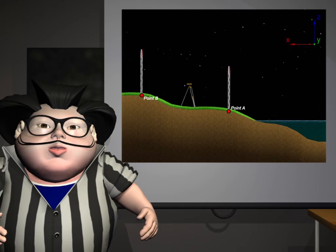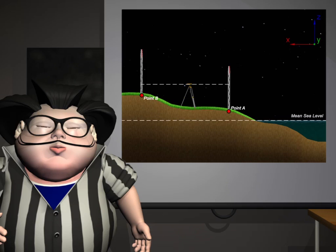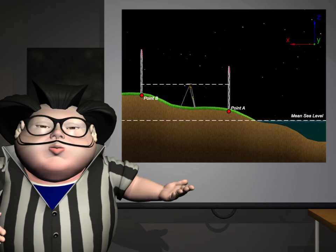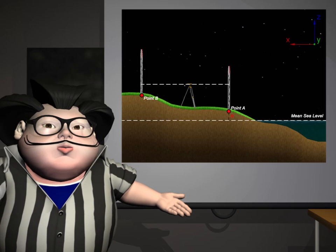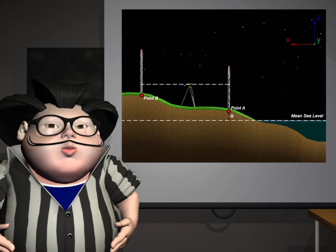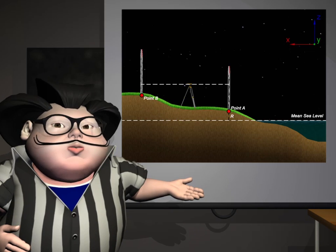First, assume the mean sea level is 0 feet. Second, the elevation for point A is equivalent to R. A equals 0 plus R. Third, place the leveling rod at point A and point B and the leveling instrument at point C.